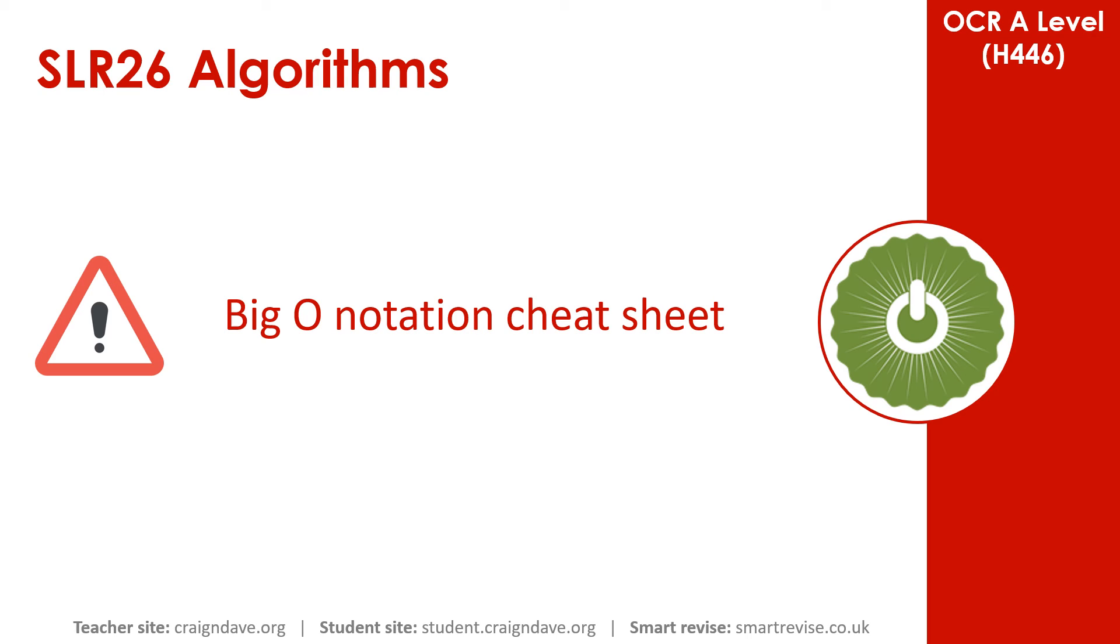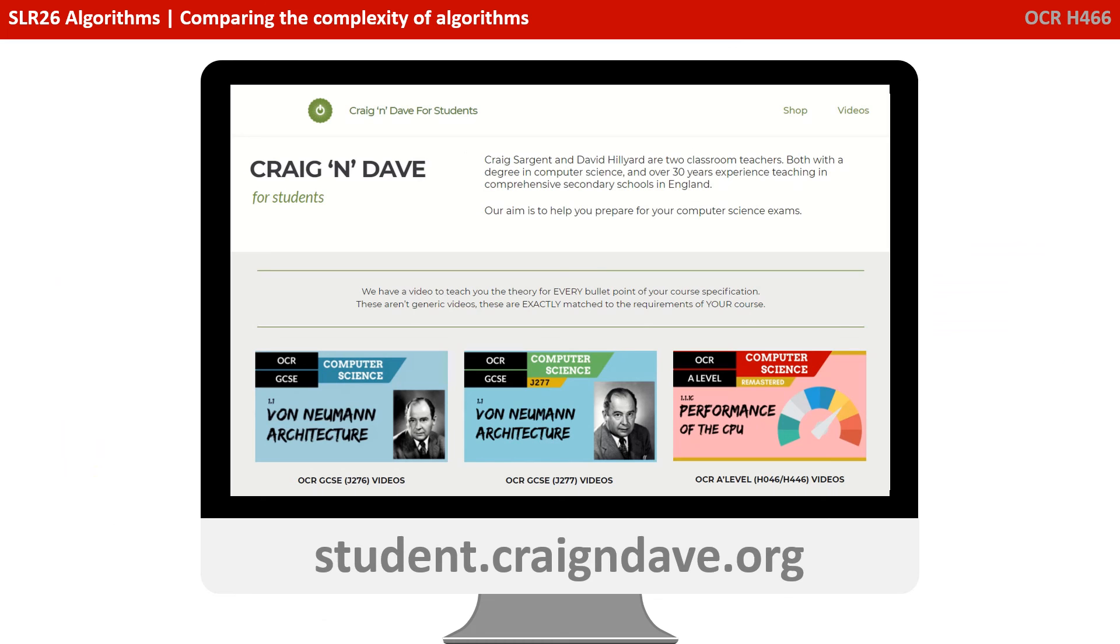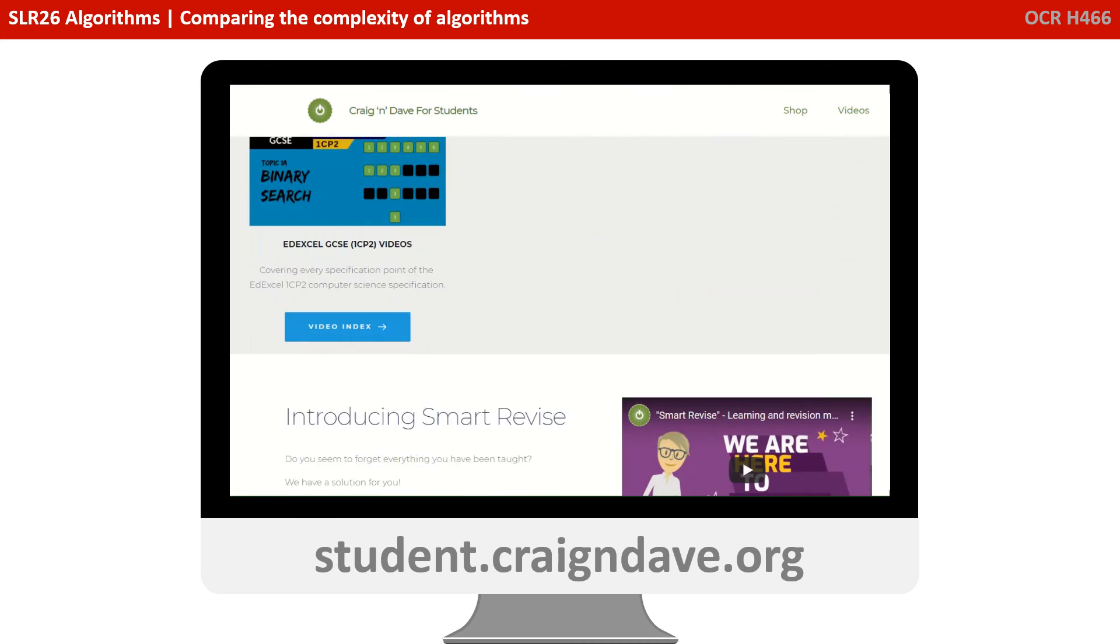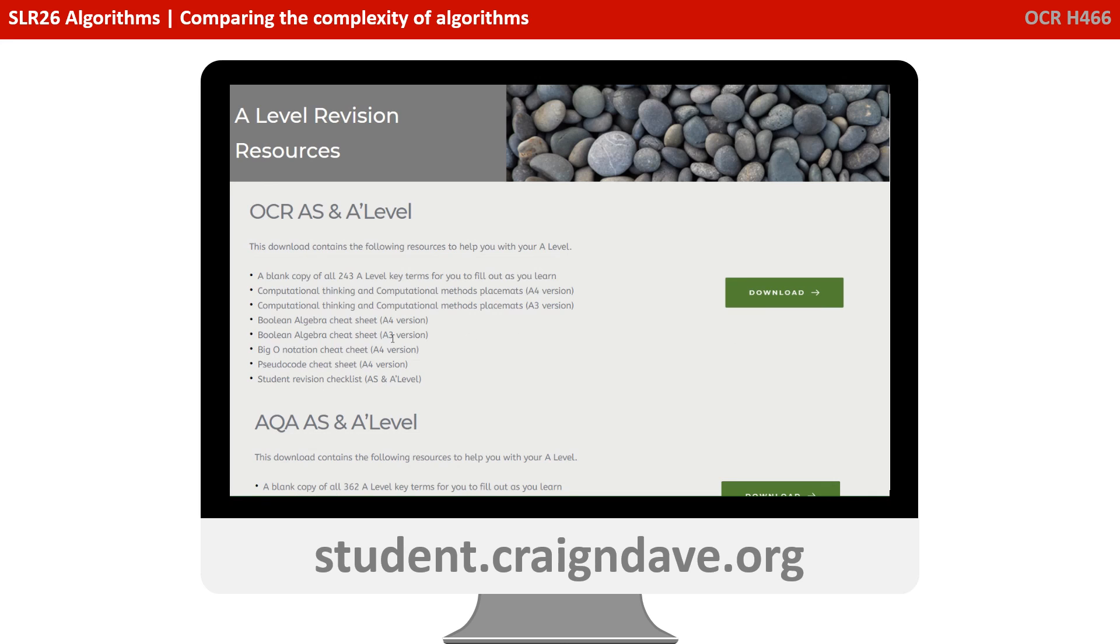Before we wrap up, we want to make you aware of our big O notation cheat sheet. This is a double-sided cheat sheet. It goes through all the big O notations you need to know about, along with simple code examples, descriptions, and typical uses. And on the back of the sheet is the summary tables you've seen in this video. This resource is completely free over at student.craiganddave.org. Just scroll down and select the A-level revision section, and then once there you can just press the download button to get this resource completely for free.